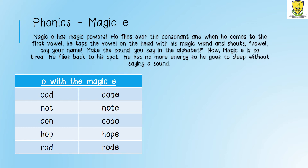The next word is 'not': N-O-T, not. If we add a magic E at the end, the O becomes an O. So when we are trying to read the word, it's going to be N-O-T-E, note.